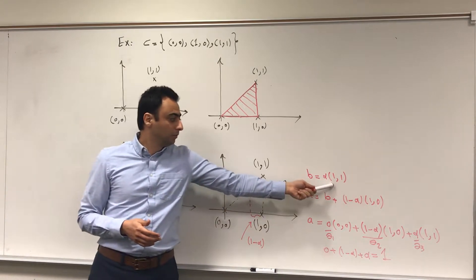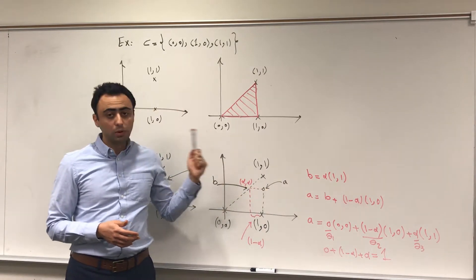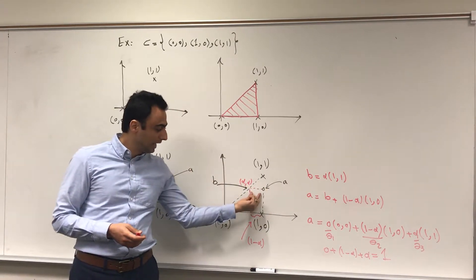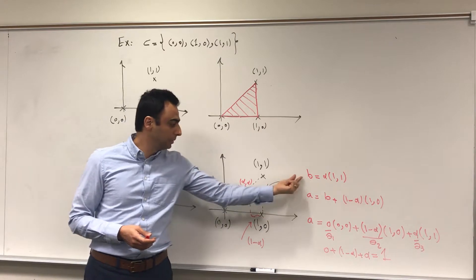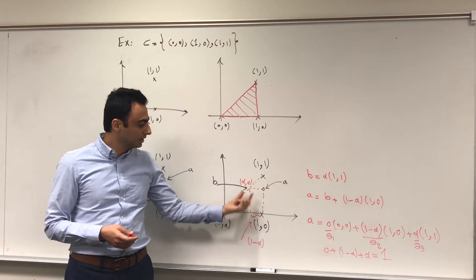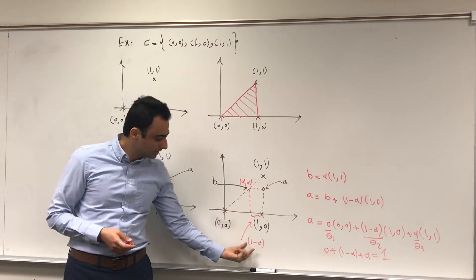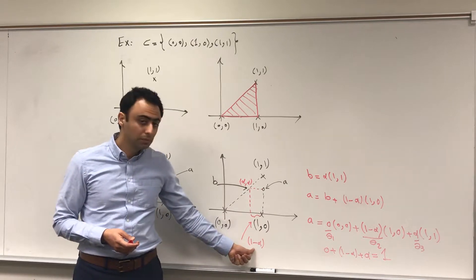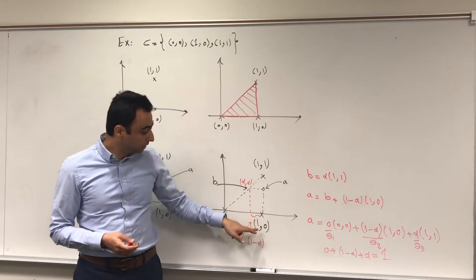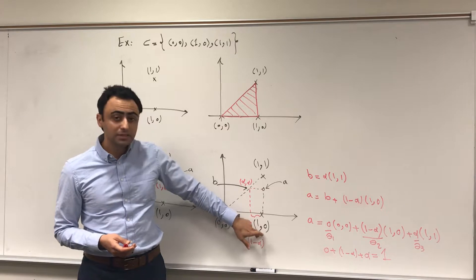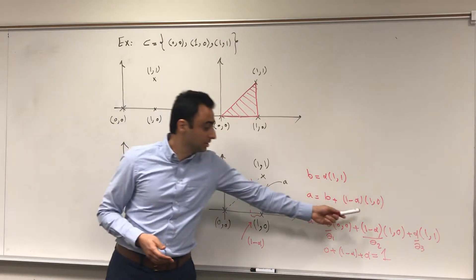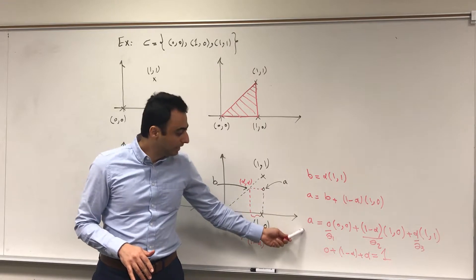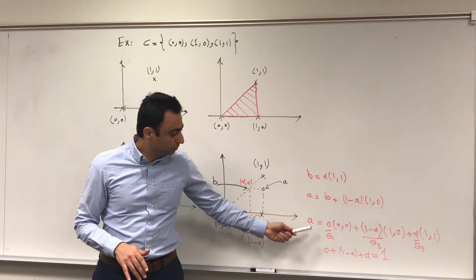Let's say we want to get point a, which is (1, alpha). To build this point we first build point b, which is alpha times (1,1) — one of our given points. We then add one minus alpha times point (1,0) to get point a.